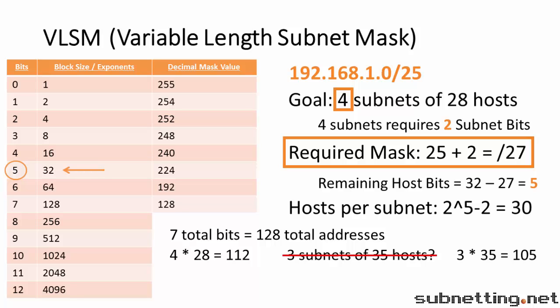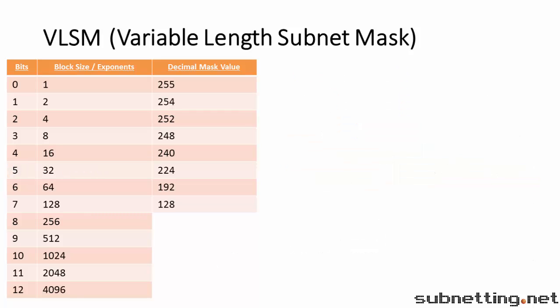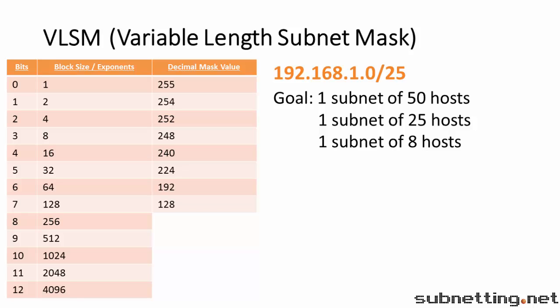Now that we've seen an example that doesn't require VLSM, let's try one where we need to use a variable length subnet mask. Let's use the same network of 192.168.1.0 slash 25, but this time we will divide our network into 3 subnets of different sizes. Suppose we want one subnet of 50 hosts, one subnet of 25 hosts, and one subnet of 8 hosts. What subnet masks would we use? Before we start, we want to order the subnets from the largest number of hosts to smallest. But in this case it is already ordered that way, so we don't have to change it.